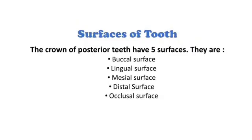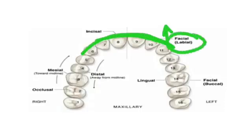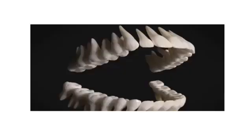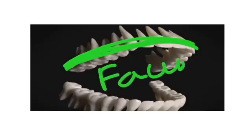The surface of the anterior tooth which is facing towards the lip is called the labial surface. This surface, in case of posterior tooth, is facing towards the cheek and is called the buccal surface. So in case of anterior tooth this is the labial surface, and in posterior tooth this is the buccal surface. Both labial and buccal surfaces together are called the facial surface.